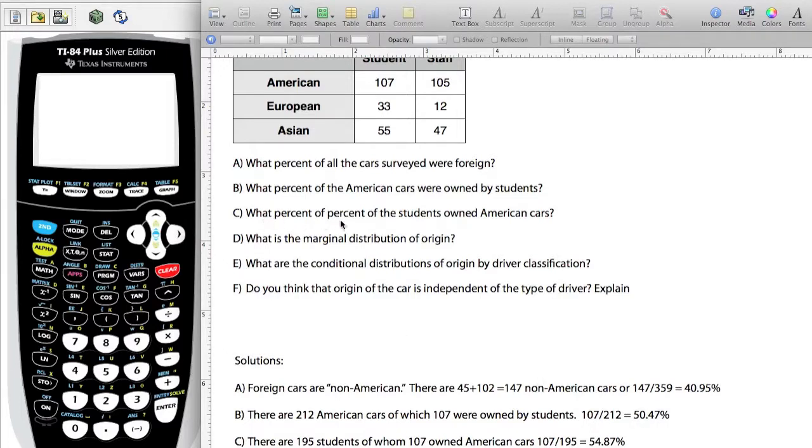The next question was, what percent of the students owned American cars? At this point, we're looking at students. We look at the total number of students, there's 195 students. We want to know out of that group, how many owned American cars. So 107 out of the 195 owned American cars, and that would be 54.87%.